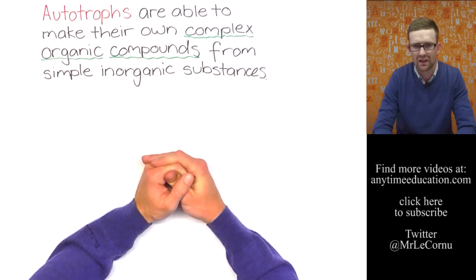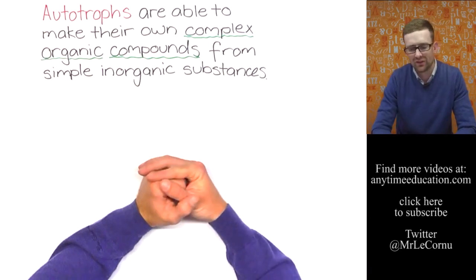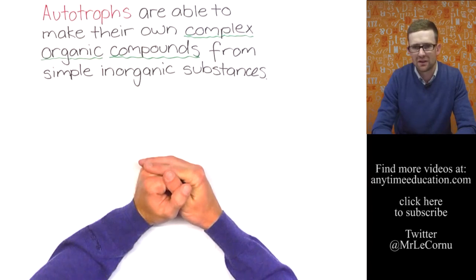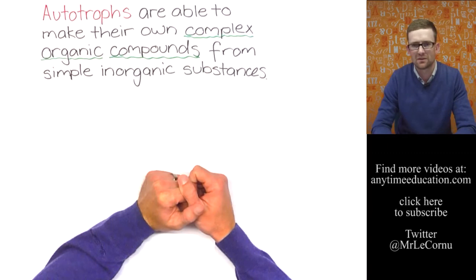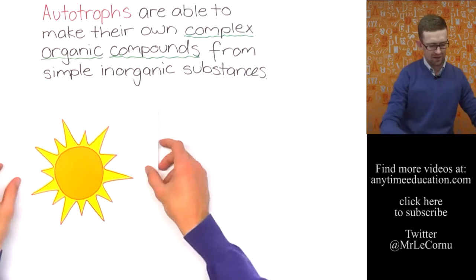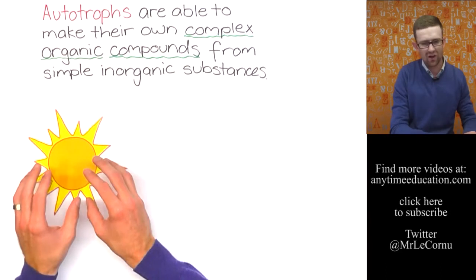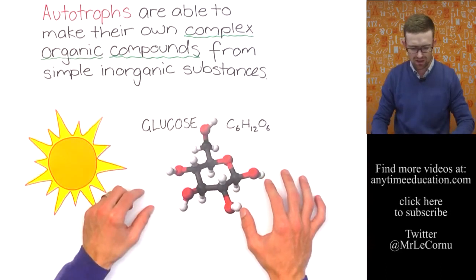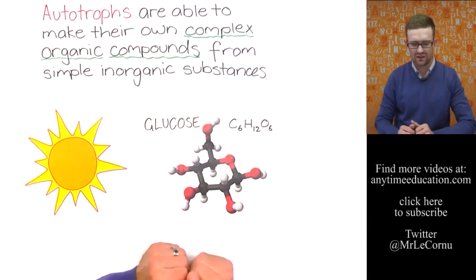Glucose is a complex organic compound and because it's a source of energy it's the food for living things. So autotrophs are able to make their own complex organic compounds or their own food and they make it from simple inorganic substances. Most autotrophs use sunlight in order to carry out that process and they transform that light energy into chemical energy to make complex organic compounds like glucose. Here it is C6H12O6.